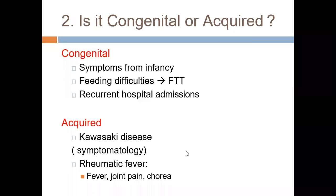Recurrent hospital admissions are usually associated with congenital cardiac diseases. For acquired disease, previously rheumatic fever was very common — presenting with fever, joint pain, and chorea — but now it's extremely rare. Kawasaki disease is now the major acquired heart disease, diagnosed on the basis of symptomatology, and we send for echocardiography to assess cardiac involvement.